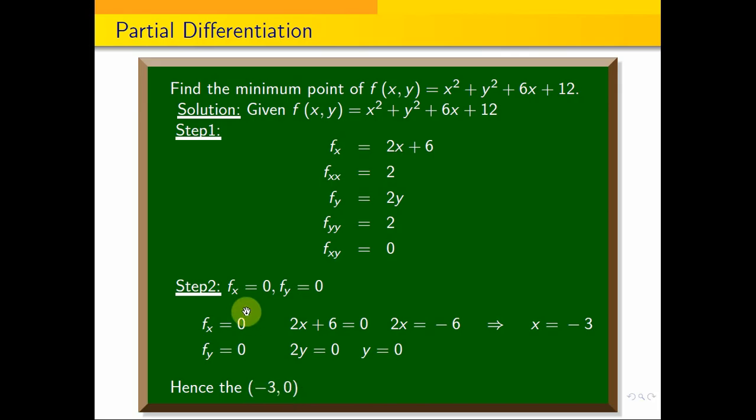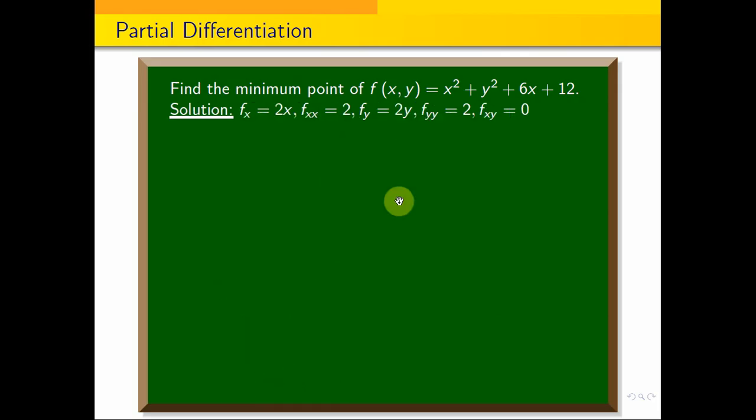Hence the stationary point is (-3, 0). This is one pair of points where we need to check for maximum or minimum.